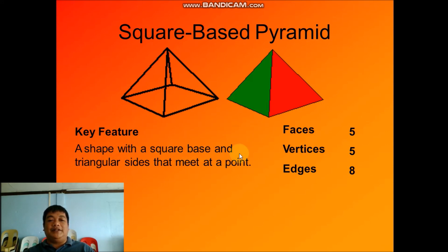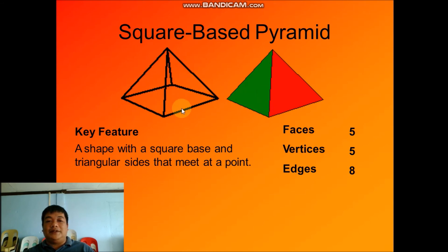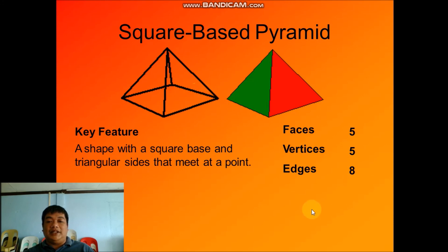Next is the square base pyramid. Its key feature is a shape with a square base and triangular sides that meet at a point. There are five faces: one, two, three, four, and the base — five total. The vertices: one, two, three, four, five. The edges: one, two, three, four, five, six, seven, eight — so there are eight edges.